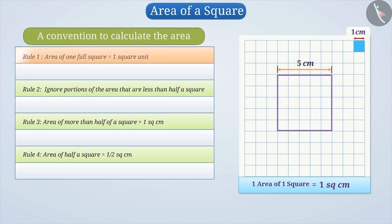Rule 1: The area of one full square is taken as one square unit. We observe that the unit distance in this figure is 1 cm. Therefore, here the area of one full square with side 1 cm will be 1 cm². In the square shown, we observe that the total number of squares are 25.